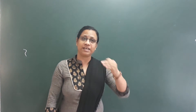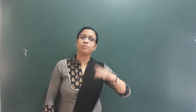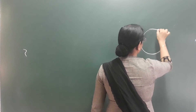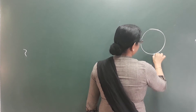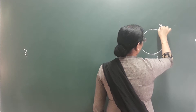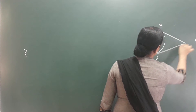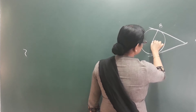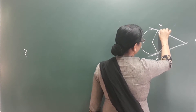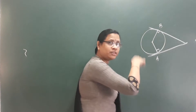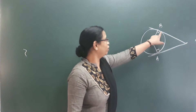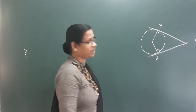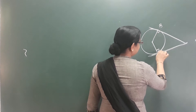We are learning a relationship with tangents and angles. In this circle, there are two points A and B, and there is a tangent at these two points. This tangent is perpendicular to the radius. What is the tangent? It is perpendicular to the radius. We are learning a 90-degree angle.